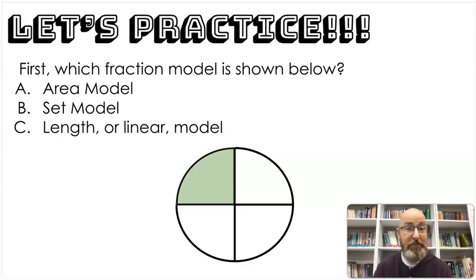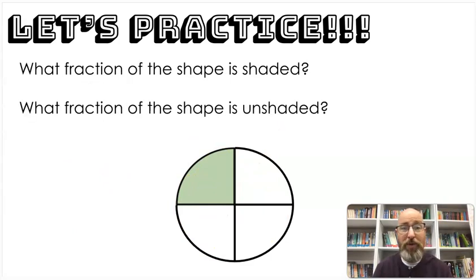So let's practice. What fraction model is this? It's the area model. That's right. Because we have an area filled in. What fraction of the shape is shaded? One-fourth, that's right. What fraction of the shape is unshaded? Three-fourths. That's correct.